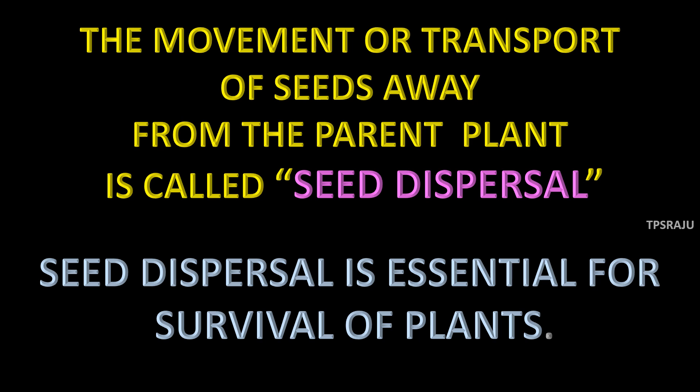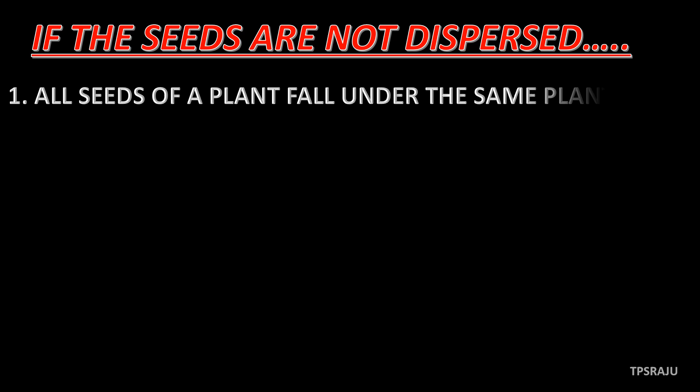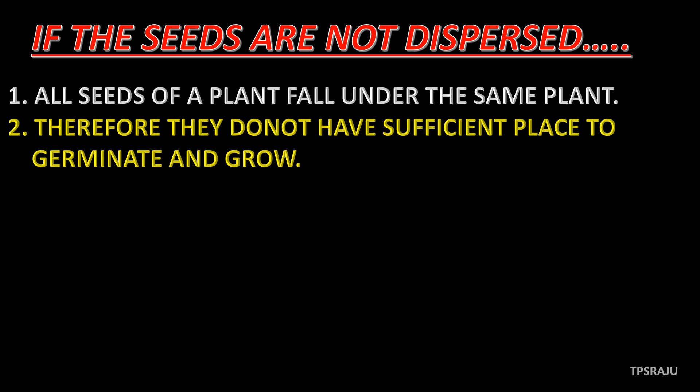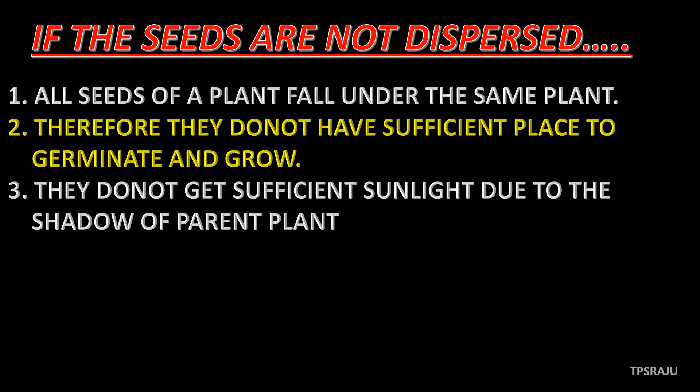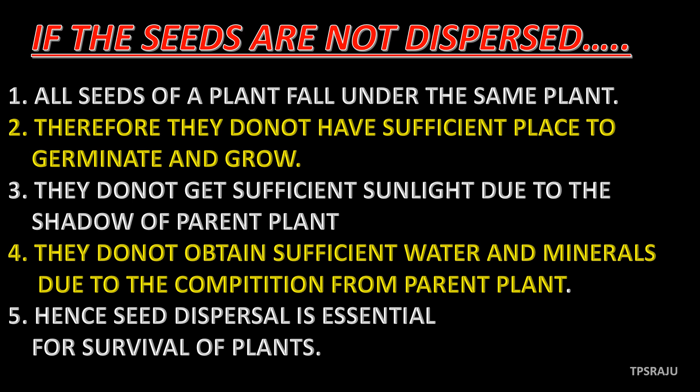Seed dispersal is essential for survival of plants. If the seeds are not dispersed, all seeds of a plant fall under the same plant. Therefore, they do not have sufficient place to germinate and grow. They do not get sufficient sunlight due to the shadow of the parent plant. They do not obtain sufficient water and minerals due to the competition from the parent plant. Hence, seed dispersal is essential for survival of plants.